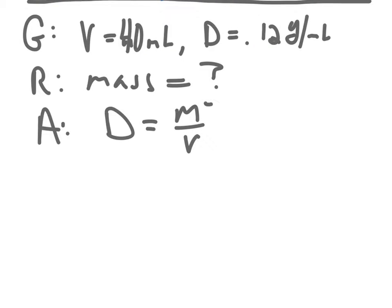Continuing on with our solution, then: solve. So we know the density, so it's 0.12 grams per milliliter equals mass, which we don't know, over the volume of 40 milliliters. So some pretty straightforward, hopefully, algebra here.